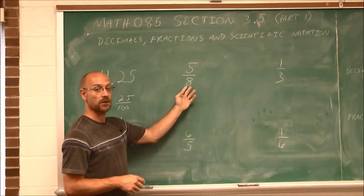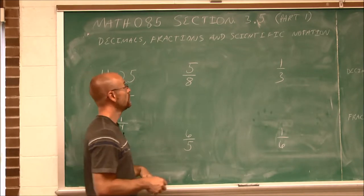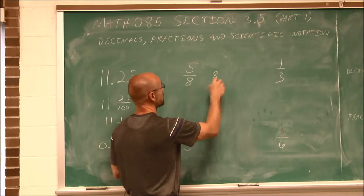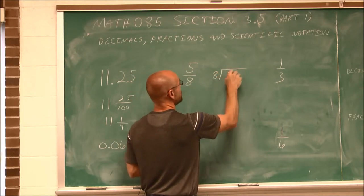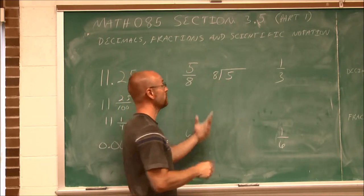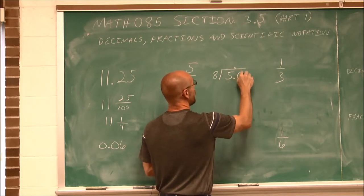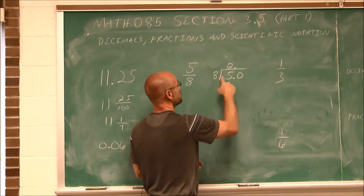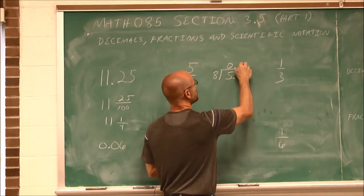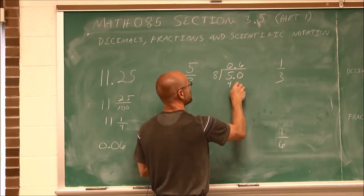What if we have a fraction and we want to convert it to a decimal? We can do that simply by doing the division. I'm going to take my divisor and my dividend and do this division. 8 doesn't go into 5, so I have to introduce a decimal and add a 0. 8 goes into 50 6 times, which would be 48.